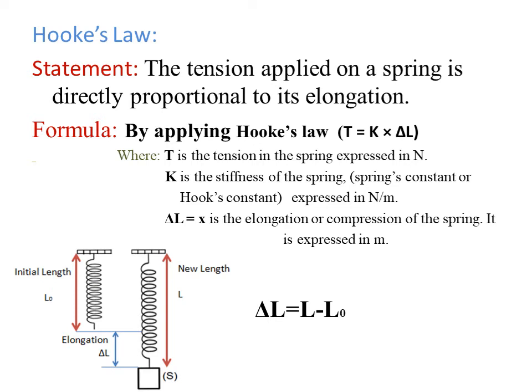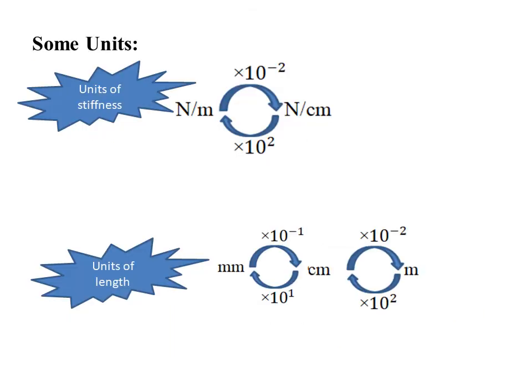By using Hooke's law formula T = K × ΔL, we can use this to find ΔL: ΔL = T/K, and to find K: K = T/x. Units of stiffness: newton per meter and newton per centimeter. SI unit is newton per meter.